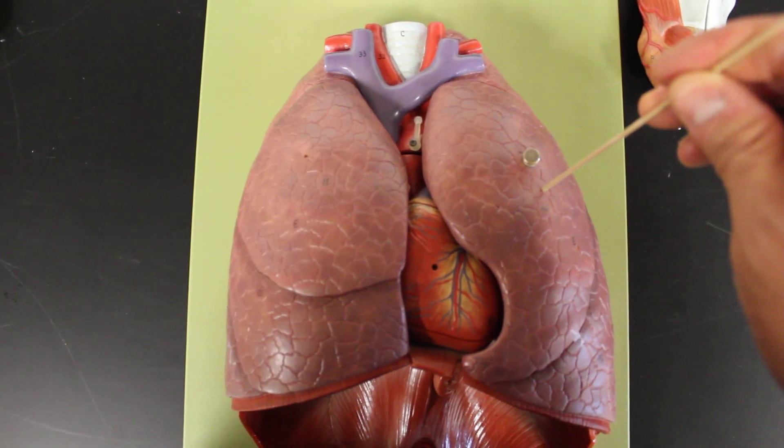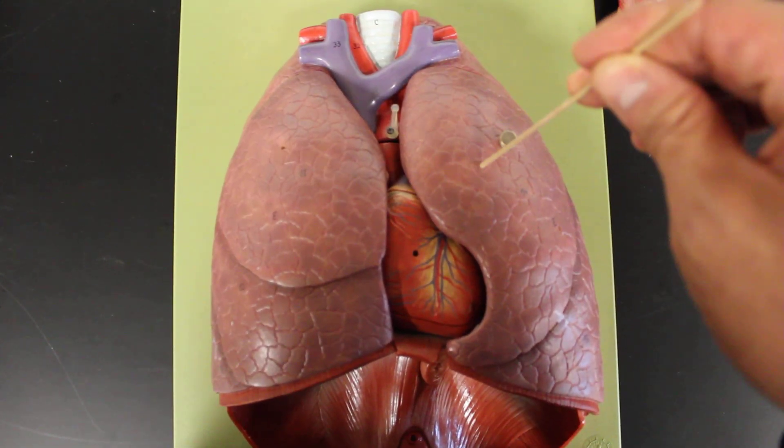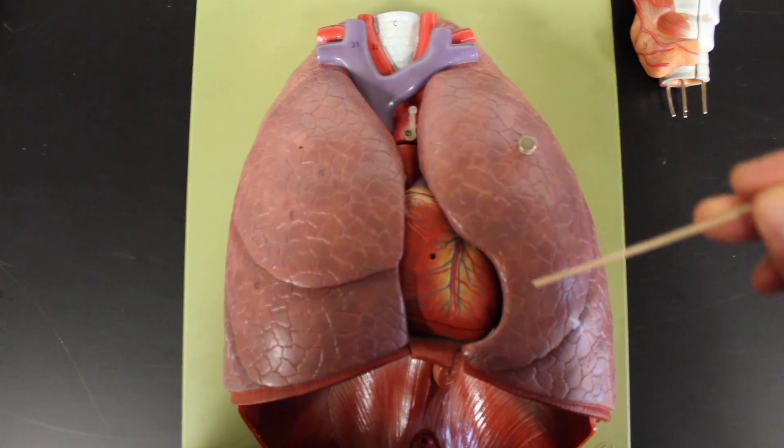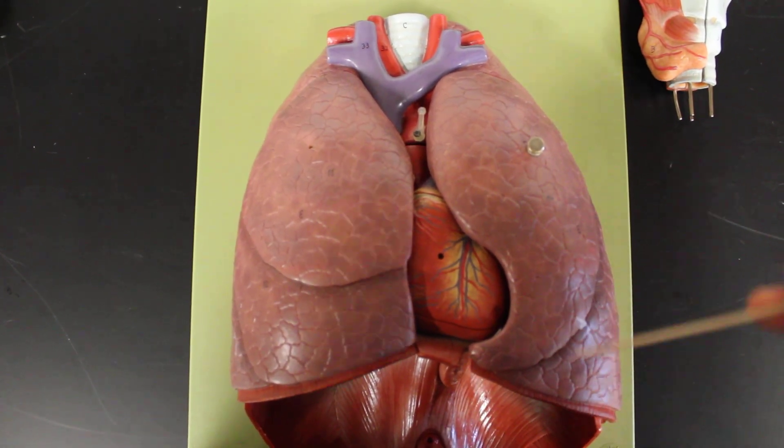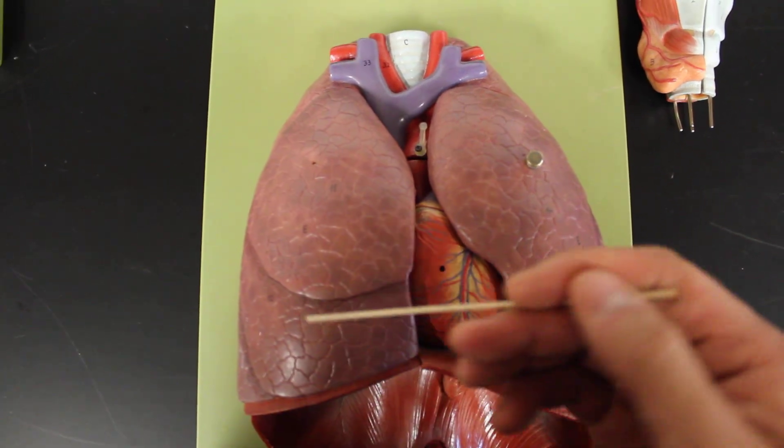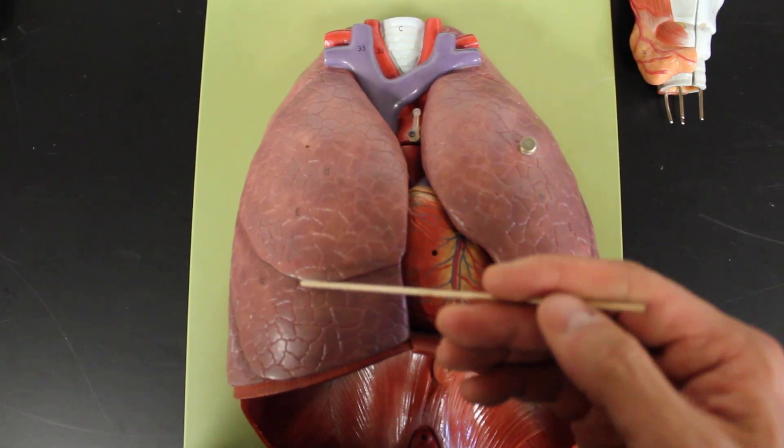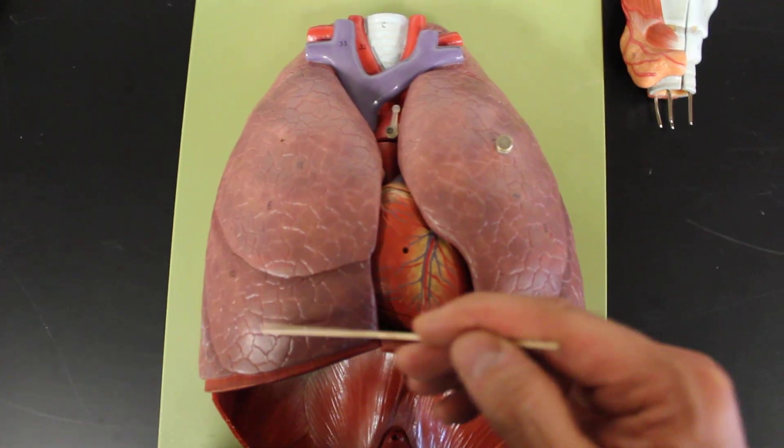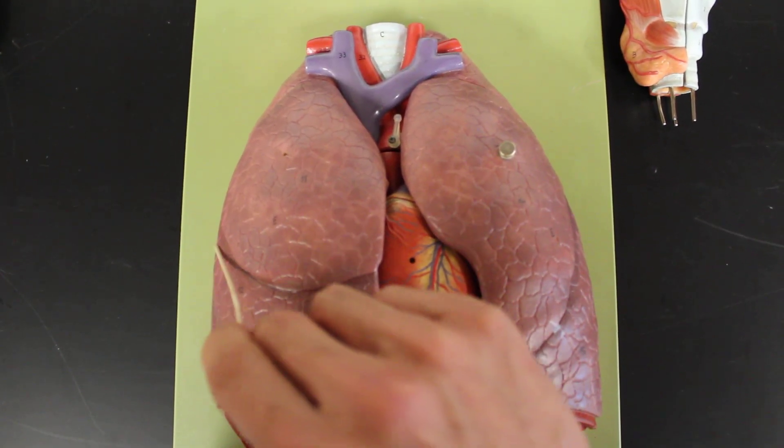Both right and left lung have a superior lobe. So these are the left superior lobe, right superior lobe, and inferior lobe. This is the left inferior lobe. Here, down here is the right inferior lobe. The right lung actually has an additional lobe, what we call the middle lobe, denoted by this kind of fissure.